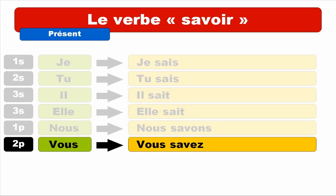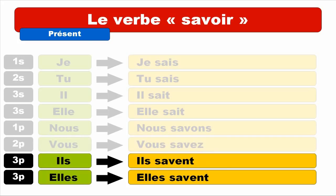And last but not least, the plural form — third person of the plural. ILS masculine, ELLES feminine. ILS SAVENT. Repeat. ILS SAVENT. Keep in mind that E and T at the ending is not pronounced — so it's only SAVENT, ending with the sound V. ILS SAVENT. Repeat. And the same form for ELLES — ELLES SAVENT. Repeat. ELLES SAVENT.